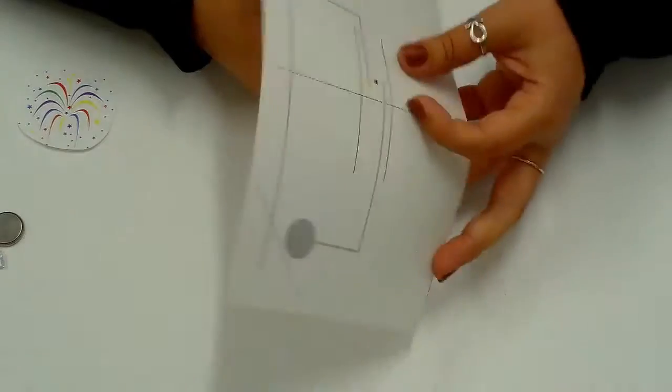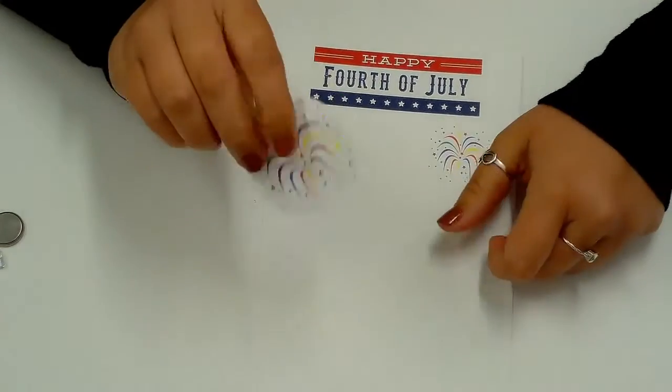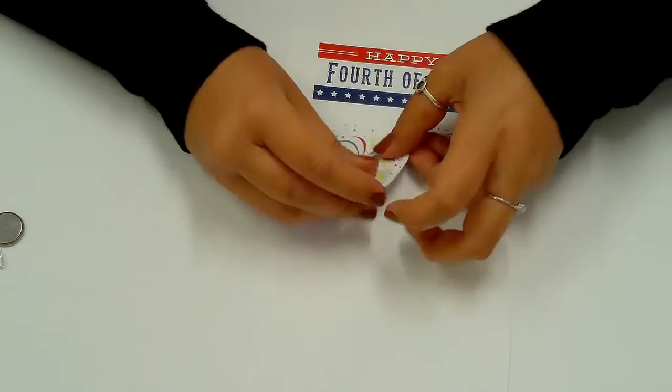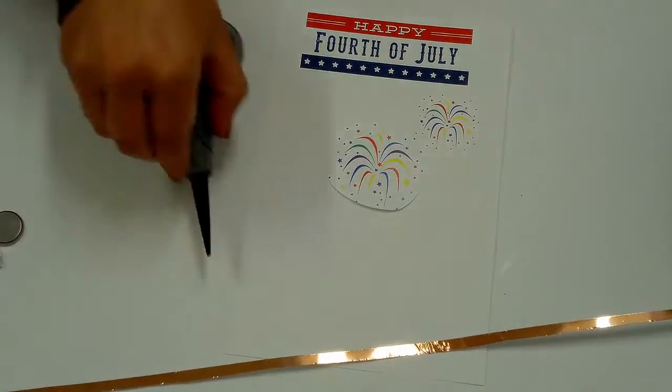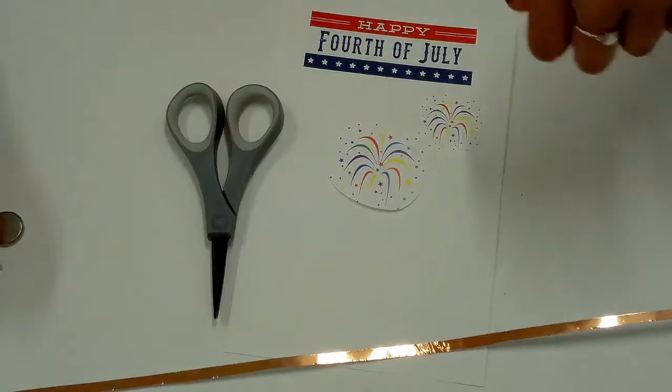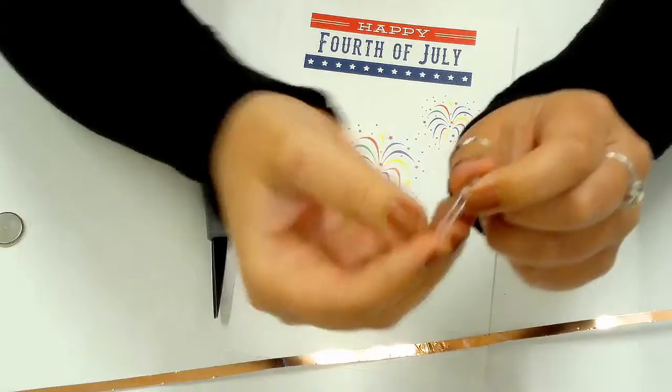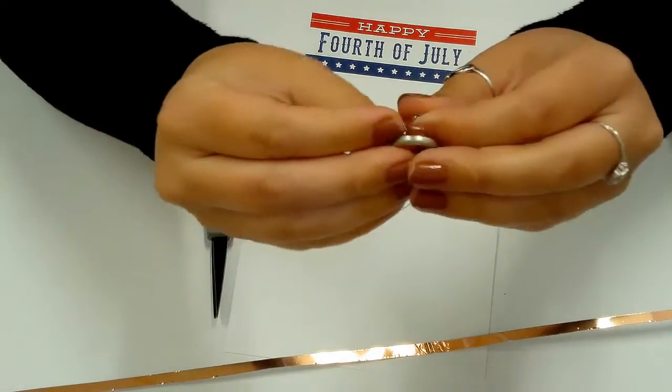Supplies include the Fourth of July card template, firework image with double stick tape secured to the back, copper tape, scissors, LED gumdrop light bulb, and a CR2032 coin cell battery.